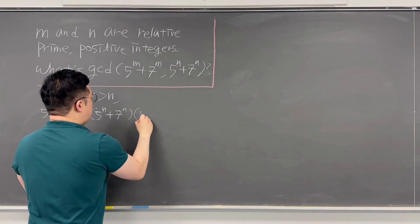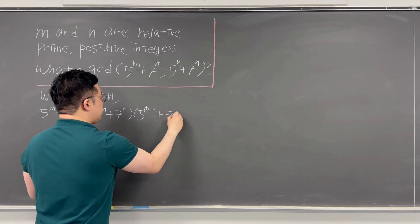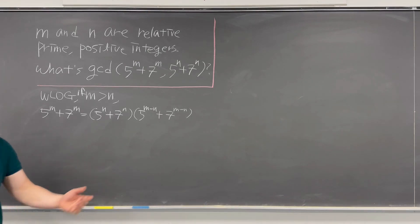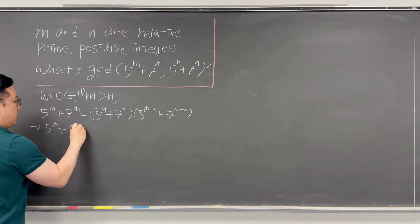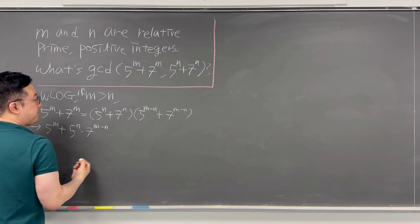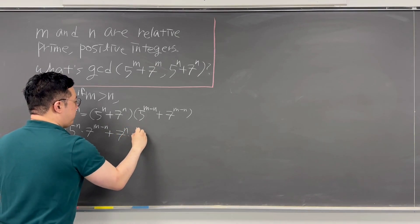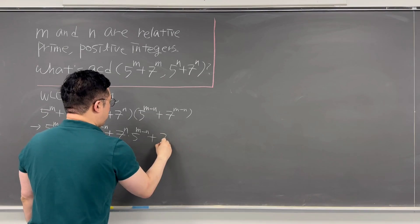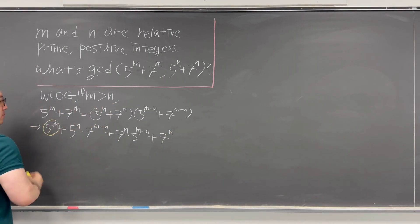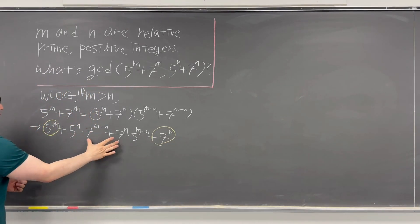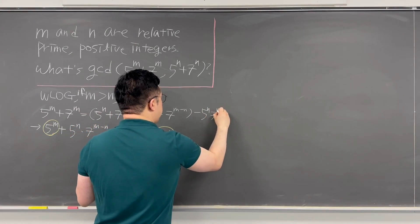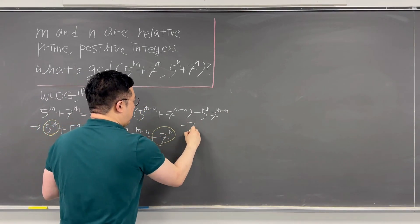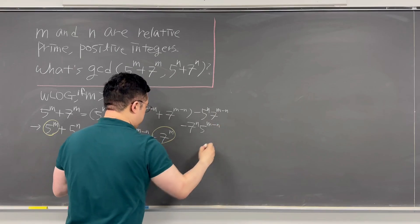The next factor should look like 5^(M−N) + 7^(M−N). But expanding this gives 5^M + 5^N · 7^(M−N) + 7^N · 5^(M−N) + 7^M. We already have 5^M + 7^M, so we need to subtract the two middle terms: 5^N · 7^(M−N) and 7^N · 5^(M−N).